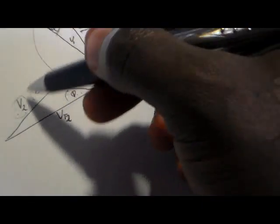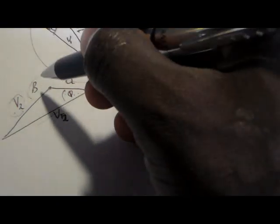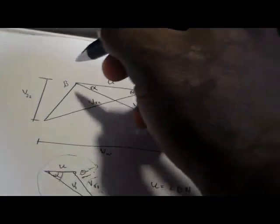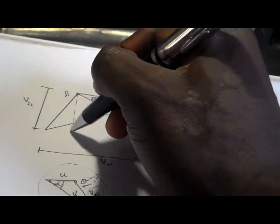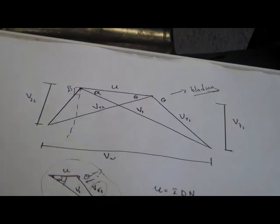If they say this diagram is subjected to axial discharge, that means beta will be equal to 90 degrees. In that case, they won't give you the value — they will just tell you the diagram is subjected to axial discharge, which means you draw a straight line on your diagram at 90 degrees.